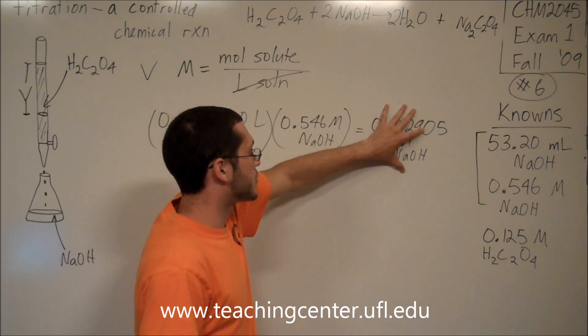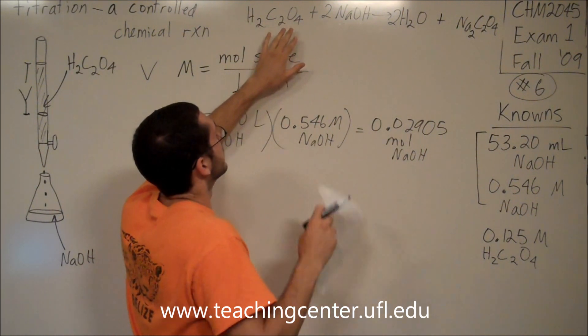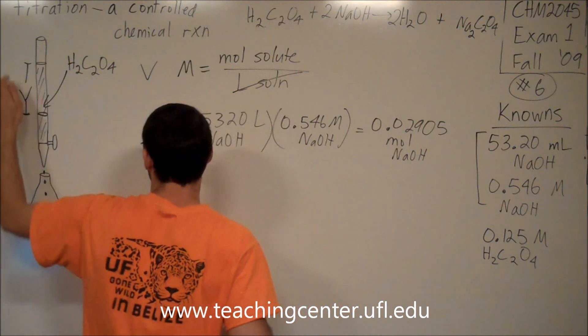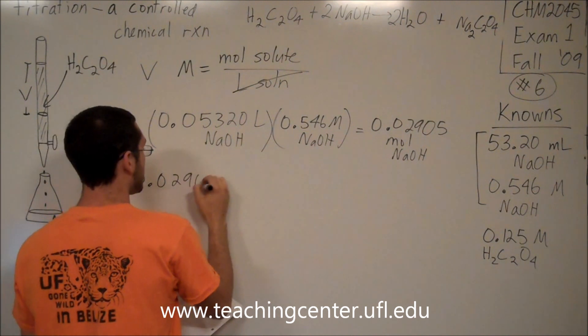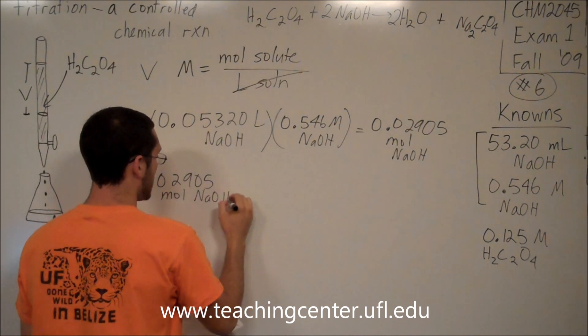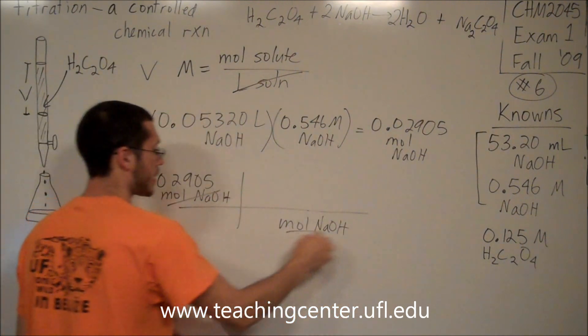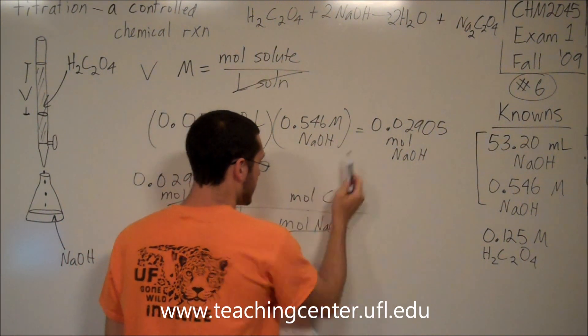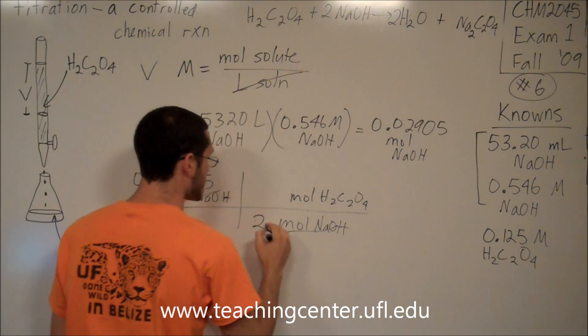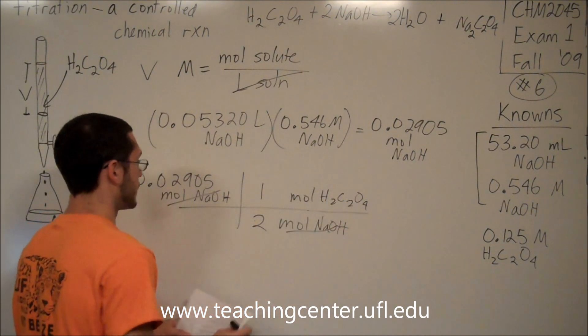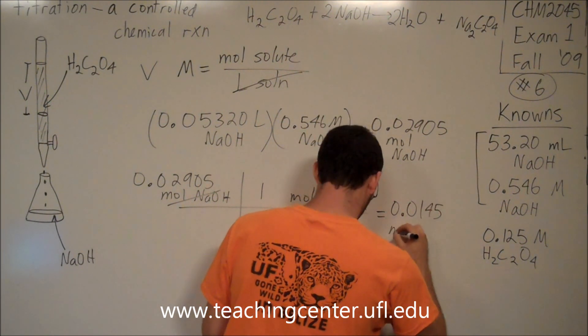So now I know how many moles of sodium hydroxide I had that reacted away by the titration, and I can relate that to the moles of oxalic acid that I started with. Because after all, I'm looking for the volume of oxalic acid. So I'm going to take the moles of sodium hydroxide and relate it to the moles of oxalic acid. I need moles of sodium hydroxide down here to cancel the moles of sodium hydroxide up there, and then I'm looking for moles of oxalic acid. It's a 2 to 1 ratio, 2 moles of NaOH to 1 mole oxalic. This comes out to be 0.0145 moles oxalic acid.